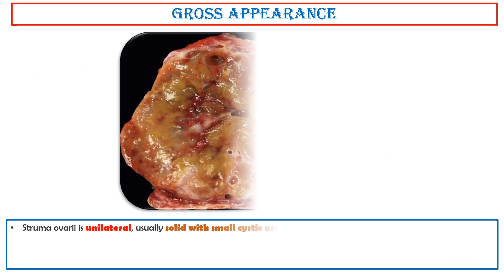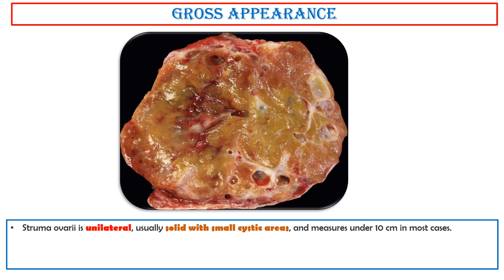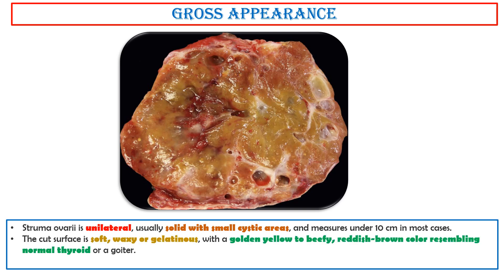Gross appearance. Struma ovaryi is unilateral and usually solid with small cystic areas, measuring under 10 cm in most cases. The cut surface is soft, waxy or gelatinous, with a golden yellow to beefy reddish-brown color, resembling normal thyroid or a goitre. Uncommonly, the cystic changes are dominant and it appears as a multiloculated cyst, which may be mistaken for serous cystadenoma.